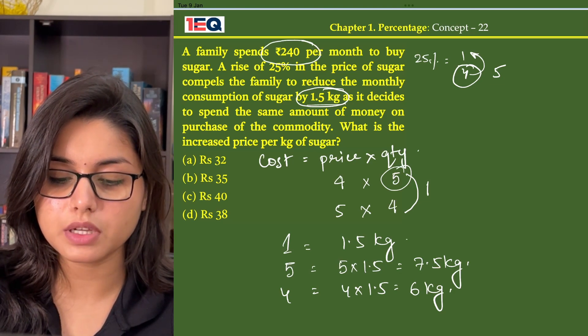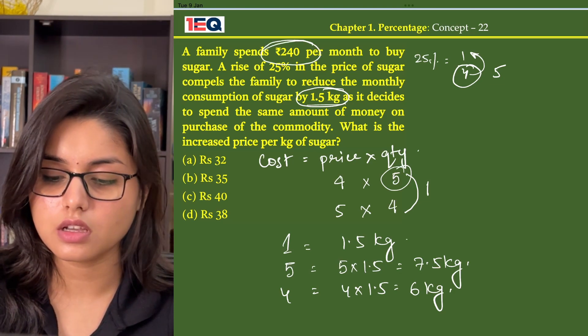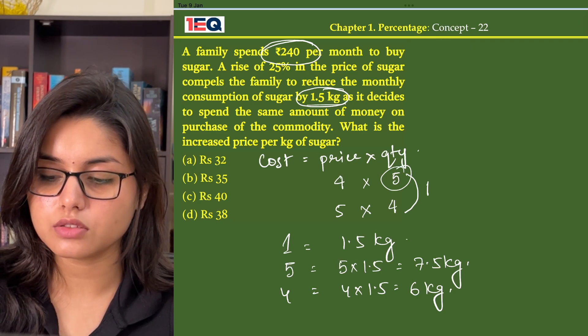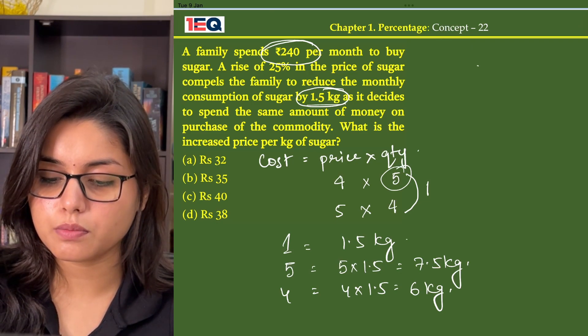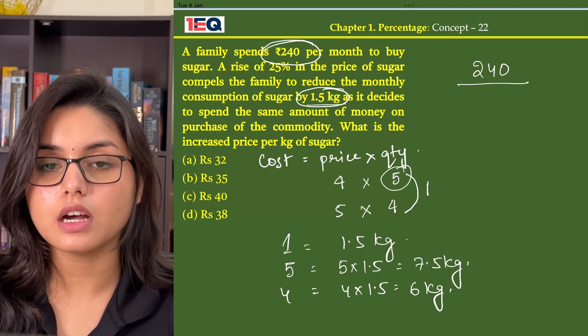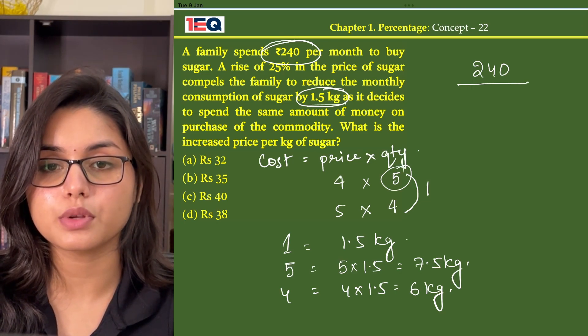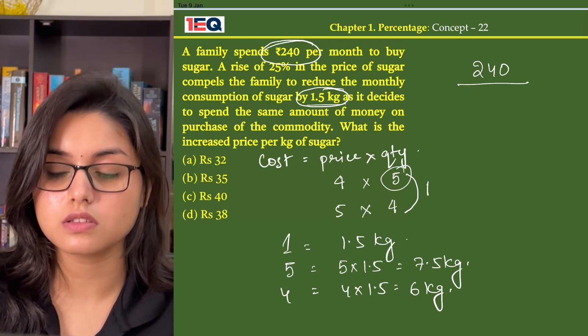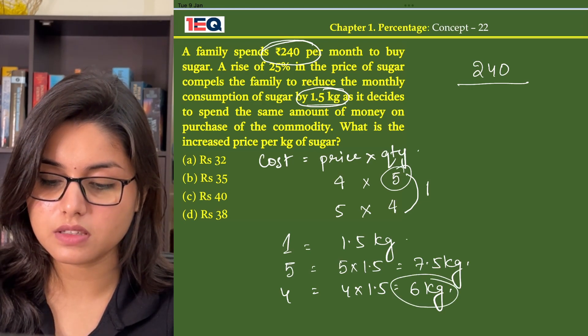Now given in the question, we know that the family spends ₹240 per month to buy sugar. We are asked to find the increased price per kg of sugar. That means we have to divide it by 6 kg.